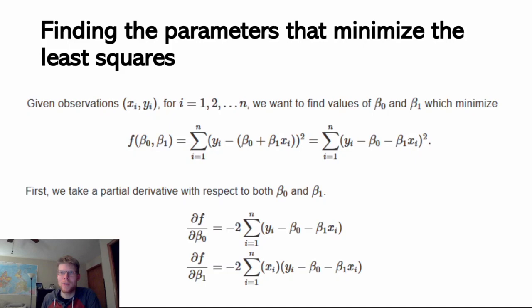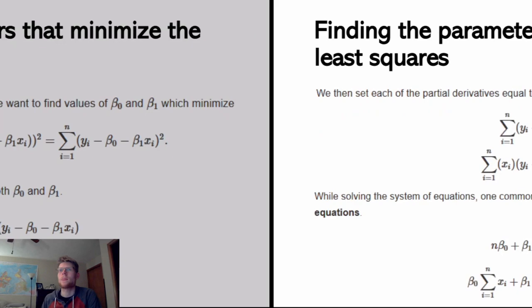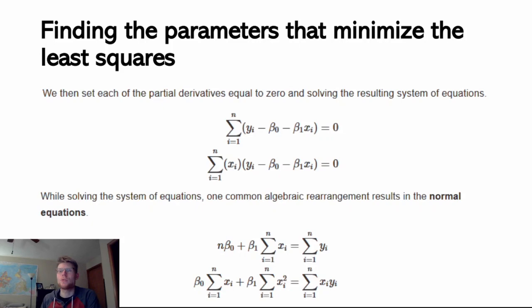We're not going to really cover the calculus, but the derivative involves the chain rule, lowering the exponent, as well as multiplying by the derivative of beta 0, which is negative, or beta 1, which is negative, to get each of these different possibilities. We're going to set those equal to 0 and then solve the equation for each parameter.